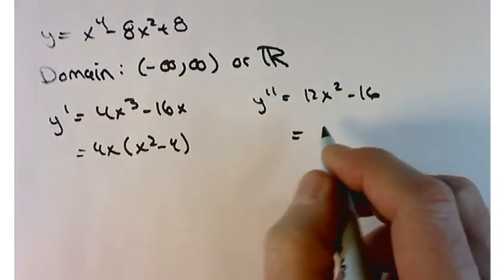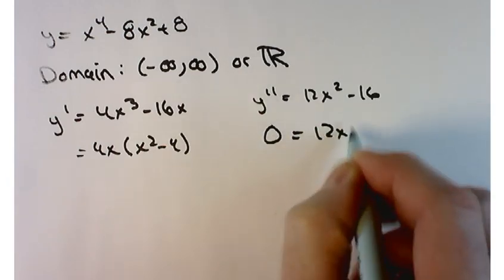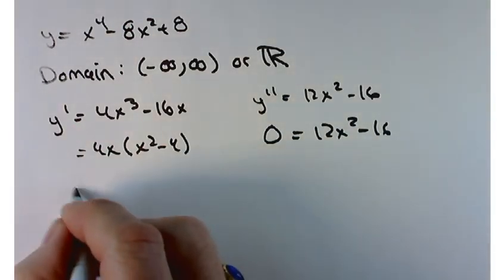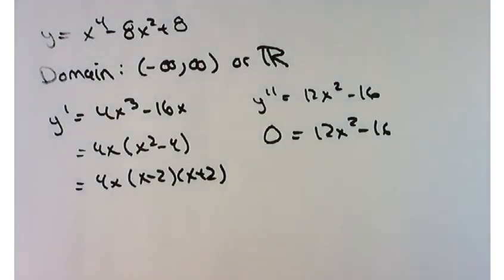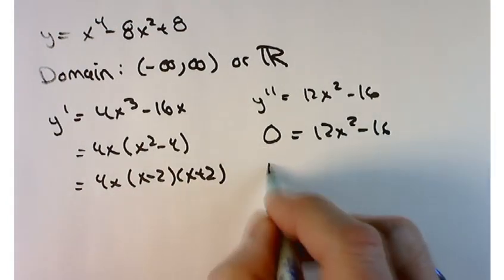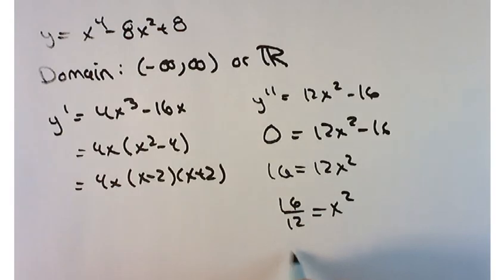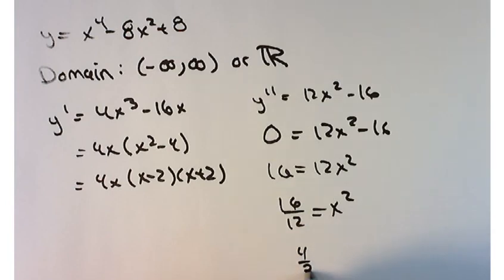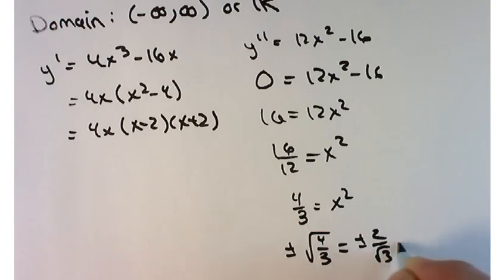Setting y' = 0: 4x times (x minus 2) times (x plus 2) = 0, so x = 0, 2, or −2. For the second derivative, moving 16 to the other side: 12x² = 16, so x² = 4/3, giving x = ± 2/√3. That's where the second derivative is zero and where it could change signs.